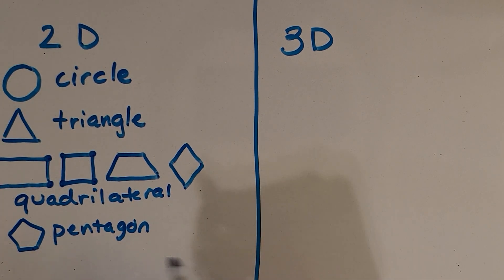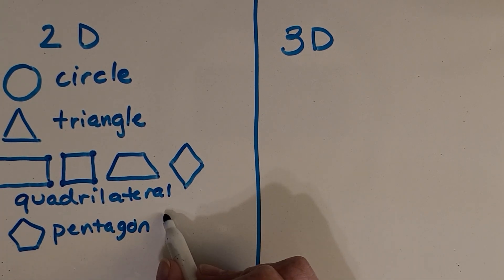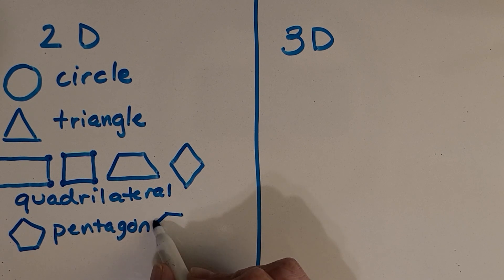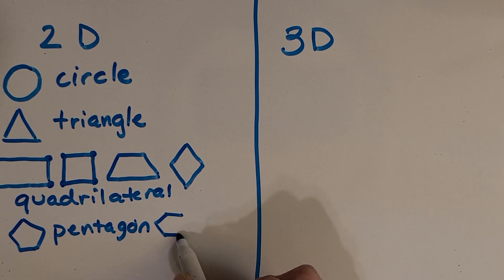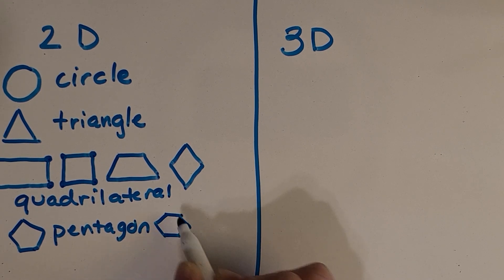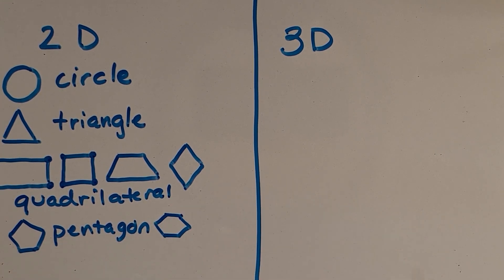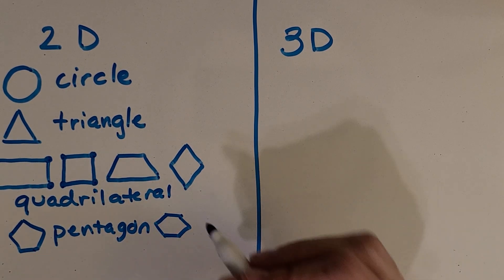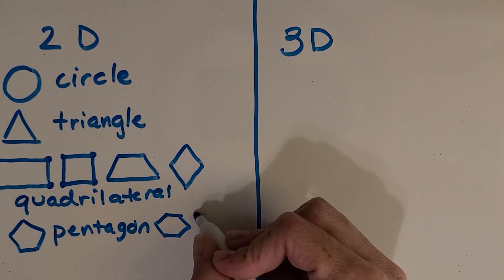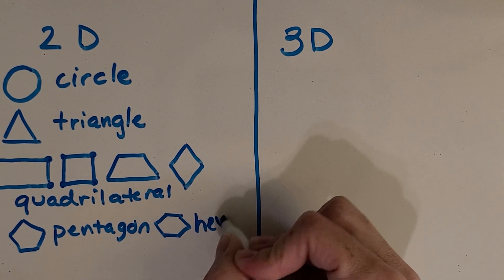How about a six-sided shape? Do you know the name of a six-sided shape? It's a hexagon.